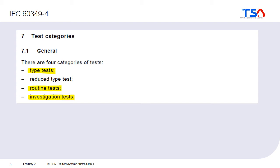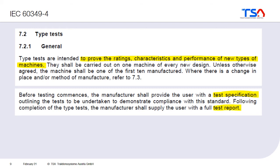There are basically two types of tests: type tests and routine tests. If you want further information you can also do investigation tests. The type test is done with one machine of every new design, and it should prove the ratings, characteristics, and performance of a new type of machine. It is also important that a test specification is sent to the customer before the tests start, and the customer is typically provided with a full test report after the tests.